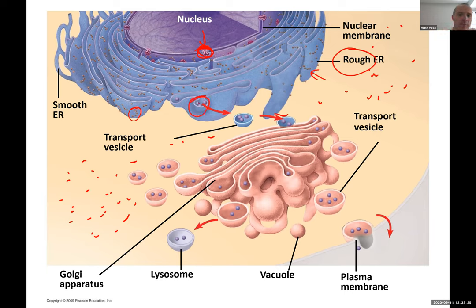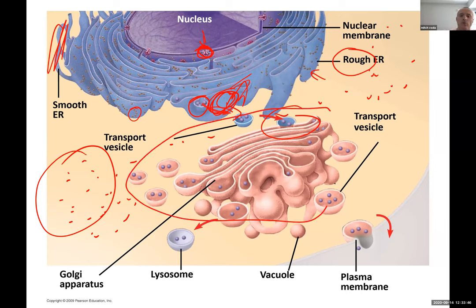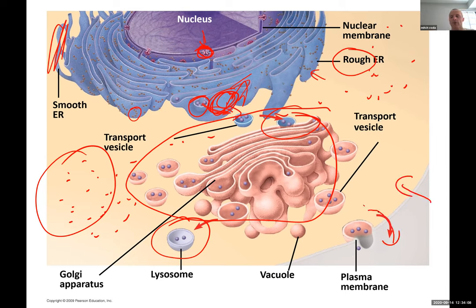The endoplasmic reticulum: if it is rough, it helps in the synthesis and transport of protein — vesicles break off after protein is produced and are taken to the Golgi apparatus. If it is smooth, it is involved in lipid synthesis and detoxification. Then the Golgi rearranges proteins into their functional form, and lysosomes are the digestive vacuoles inside the cell. Remember, these vacuoles can be endocytotic or exocytotic.